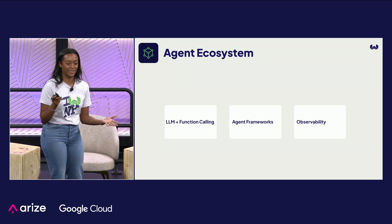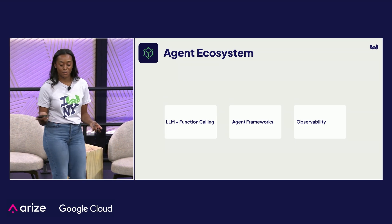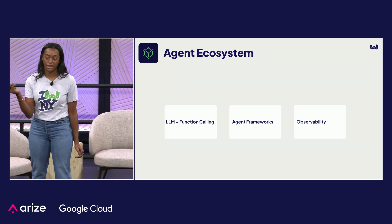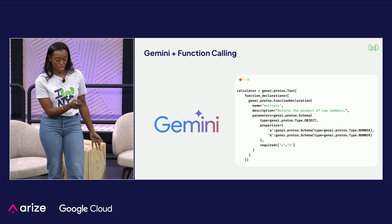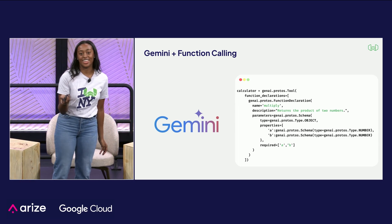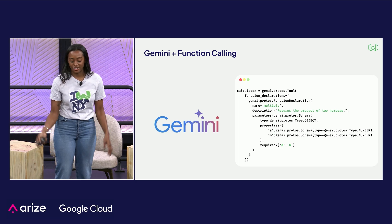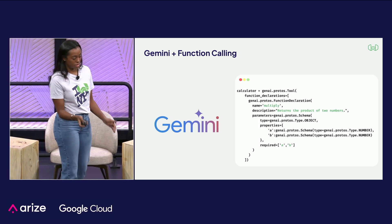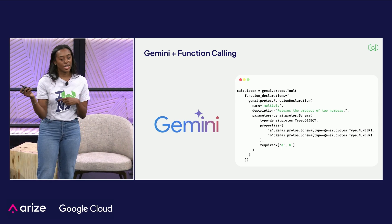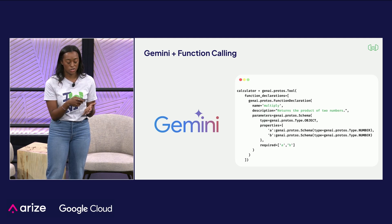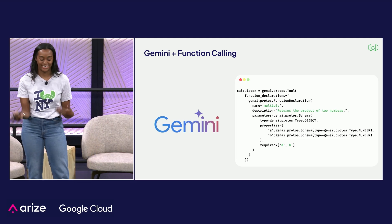Now I want to talk about the agent ecosystem and how you can achieve agentic RAG through LLM plus function calling or agent frameworks, and adding observability. Here we have Gemini, which supports function calling. For example, with a calculator tool defined as a JSON schema, the user sends a query, Gemini is given all available tools, selects the appropriate one, sends it back to your application which calls the tool, and then you send the output from the tool back to Gemini to form the final output.